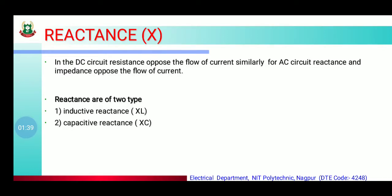First one is reactance. Reactance को हम X से denote करते हैं। In the DC circuit, resistance opposes the flow of current. Similarly, for AC circuit, reactance and impedance oppose the flow of current. हमने DC circuit में resistance का use किया था जो current को oppose करता था, but in AC series circuit हम reactance and impedance का use करेंगे जो flow होने वाले current को oppose करेगा।